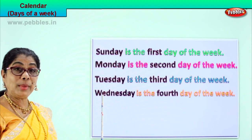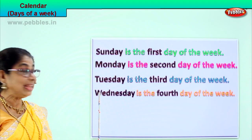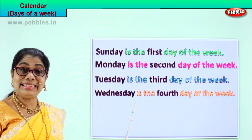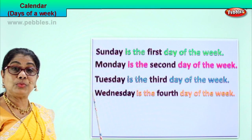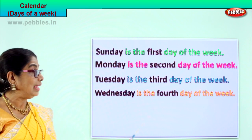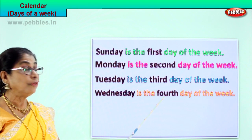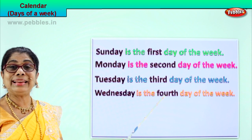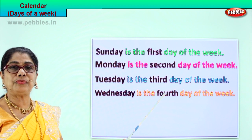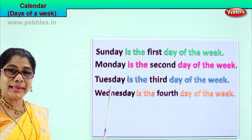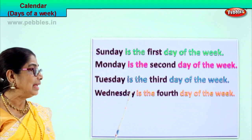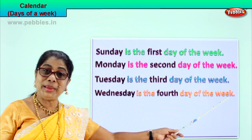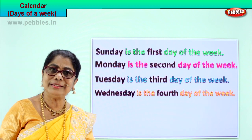Wednesday. Spell Wednesday: W-E-D-N-E-S-D-A-Y. Wednesday is the fourth day. Spell fourth: F-O-U-R-T-H. Wednesday is the fourth day of the week.